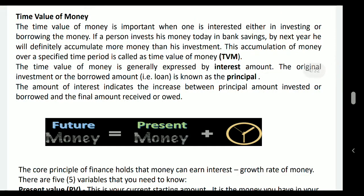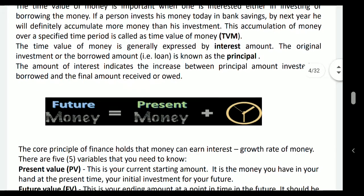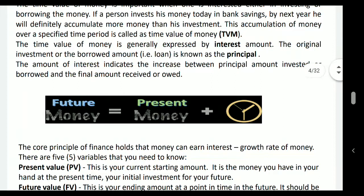Time value of money is generally expressed as the interest rate. The original investment or borrowed loan amount is known as the principal. So these are the two terms: principal, which is the original amount, and interest, which is the growth over the principal.